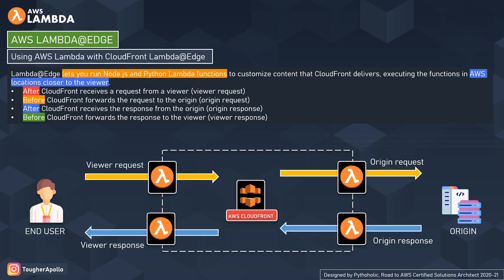The first event is viewer request — the incoming request to CloudFront. It triggers Lambda after CloudFront receives a request from the user, and before executing the code it checks whether the requested object is already in the CloudFront cache. The user sends a request and CloudFront checks if it is already cached before sending it to the origin.